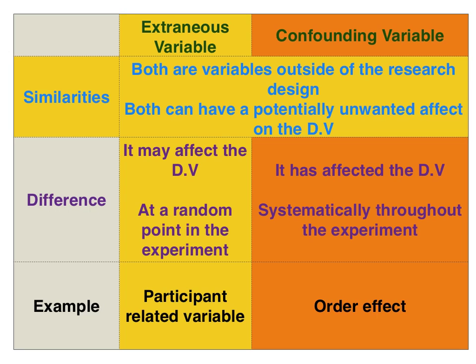The difference is that an extraneous variable may affect the dependent variable — as identified in the discussion section of your research report — and this effect will occur at some random point in the experiment. A confounding variable, on the other hand, has affected the dependent variable systematically throughout the experiment.